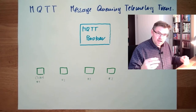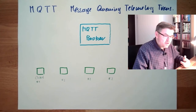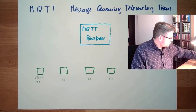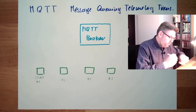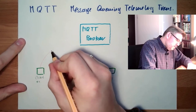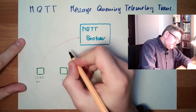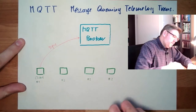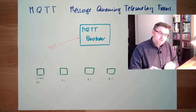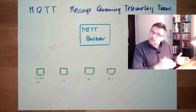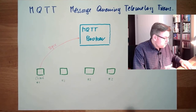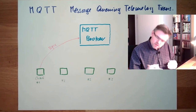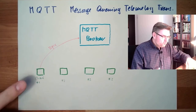Each client may publish a so-called topic. There is a topic which might be transferred to the MQTT broker. This topic consists of the name of the topic and the content of the topic. The content is not totally specified — it's not just a number, it can be text also.